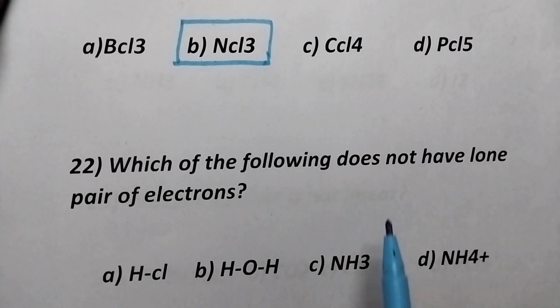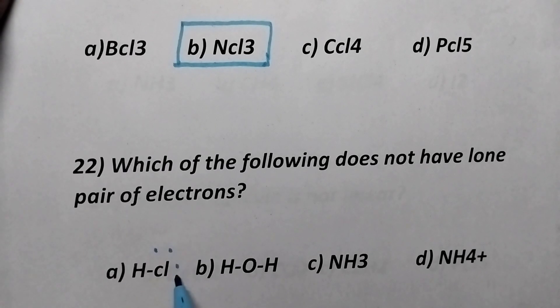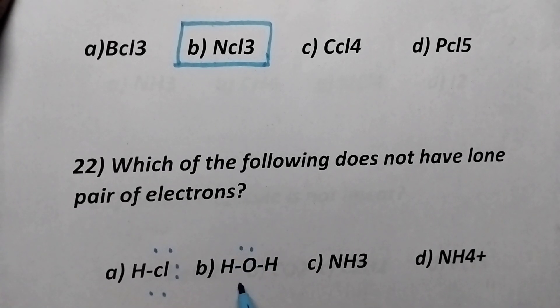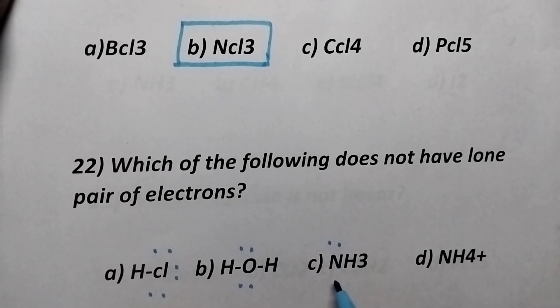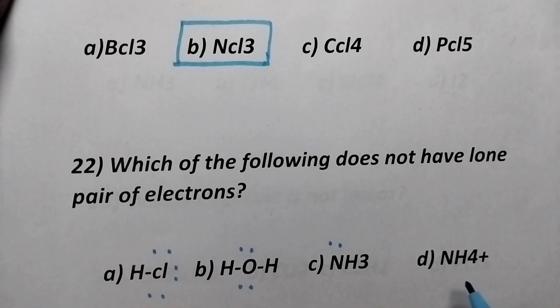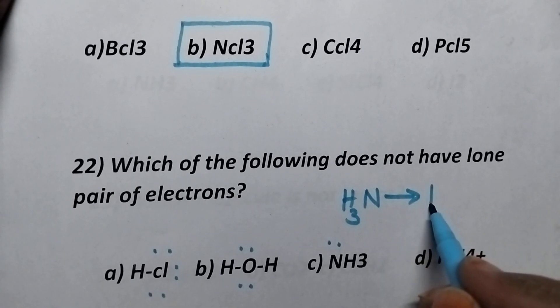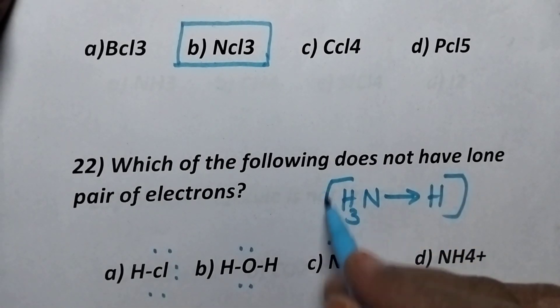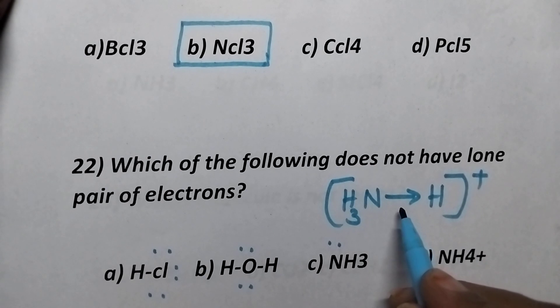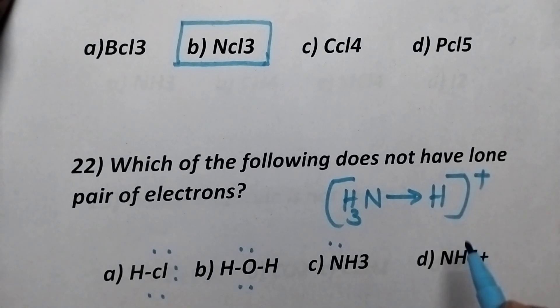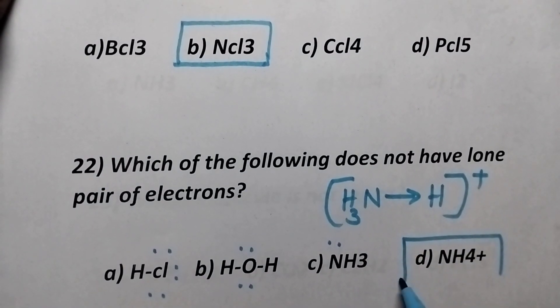Which of the following does not have lone pair of electrons? Chlorine contains three lone pairs, hydrogen contains two lone pairs, ammonia contains one lone pair of electron. Coming to the ammonium ion, here during the formation of ammonium ion, that lone pair is used to form the covalent bond, coordination covalent bond between ammonia and H+. So, option D is the right option.